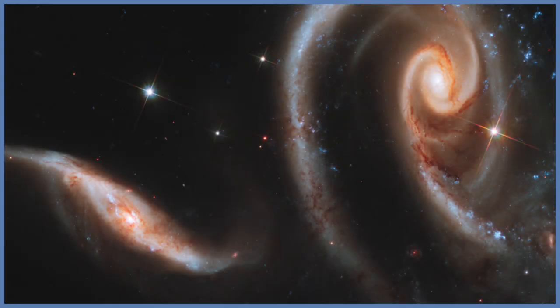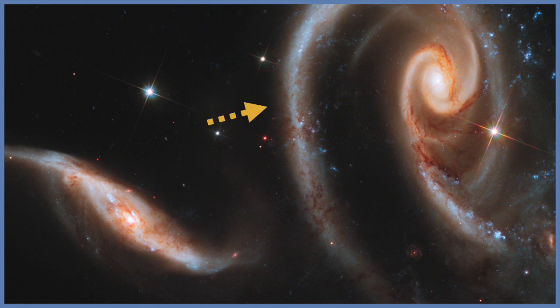Galaxies come in all shapes and sizes, and it is very hard to tell how large a galaxy is based solely on its photograph. For example, a very large galaxy that is also very distant can look the same size as a much smaller galaxy that is very nearby. So you have to know a galaxy's distance in order to know the galaxy's size.